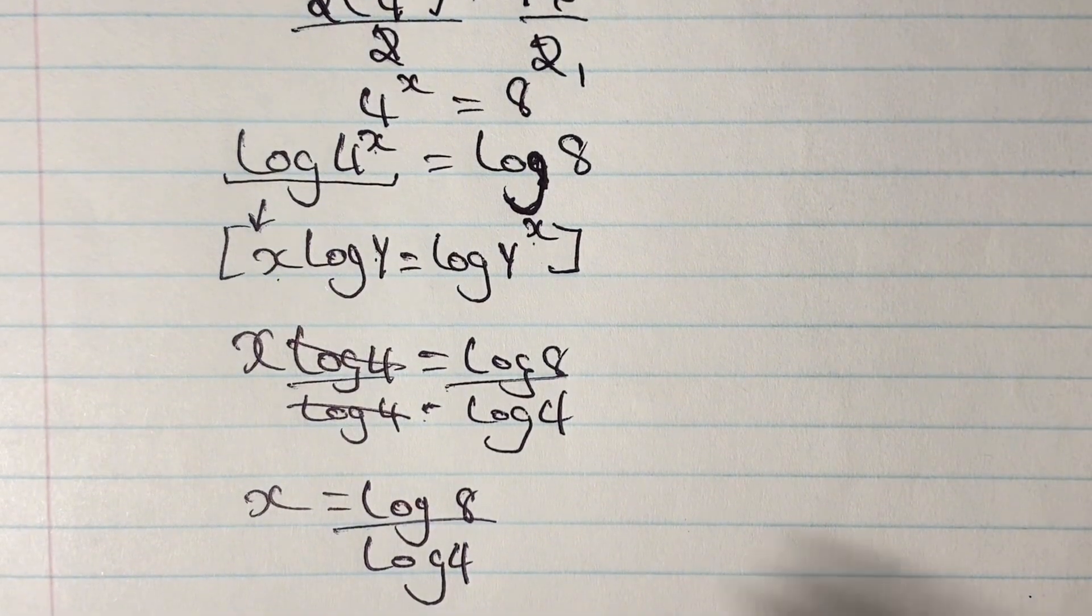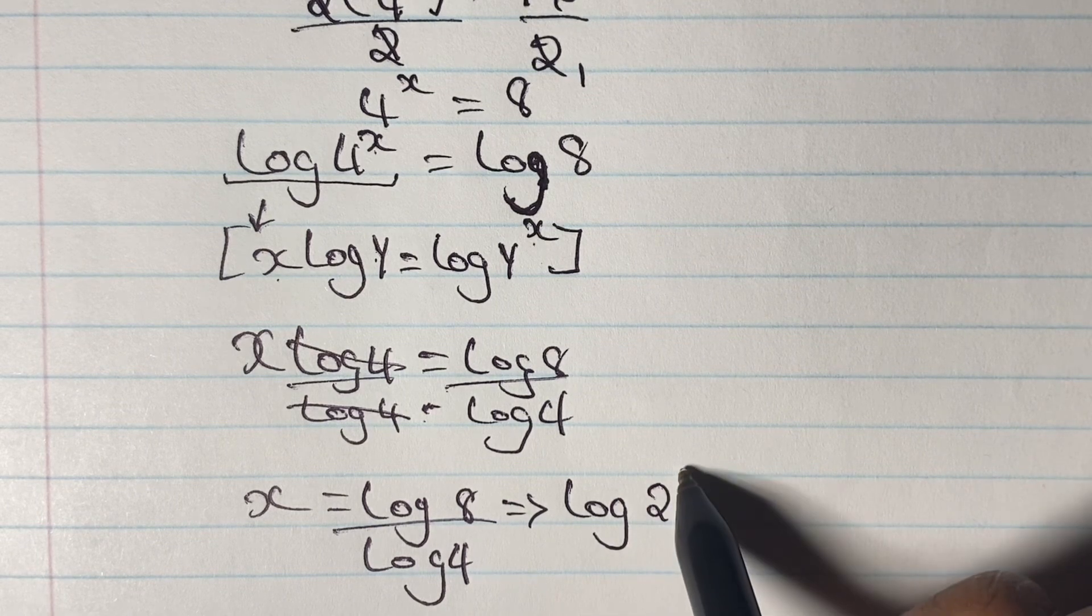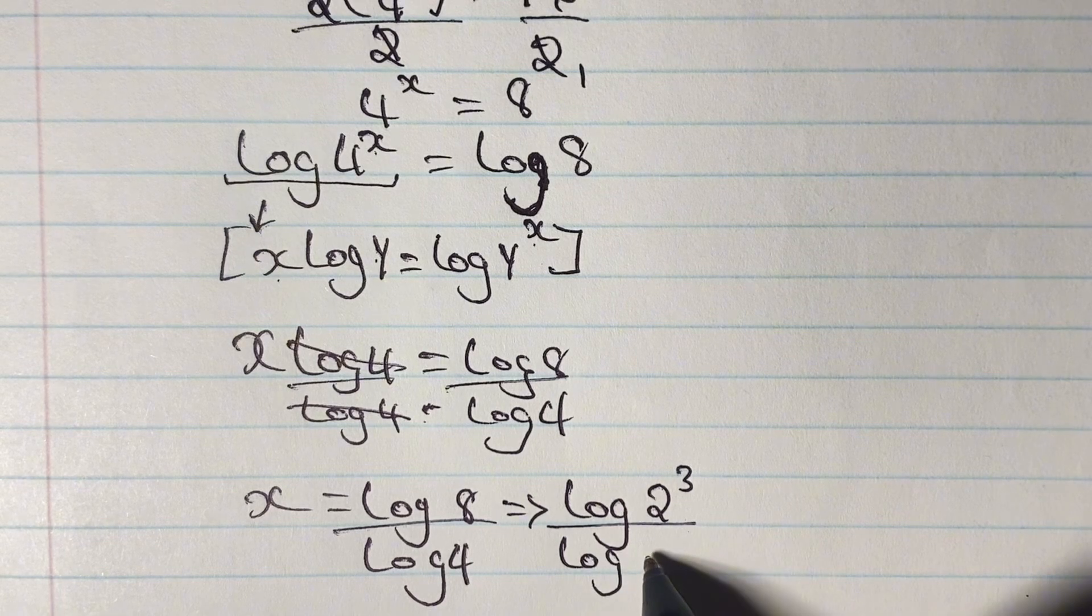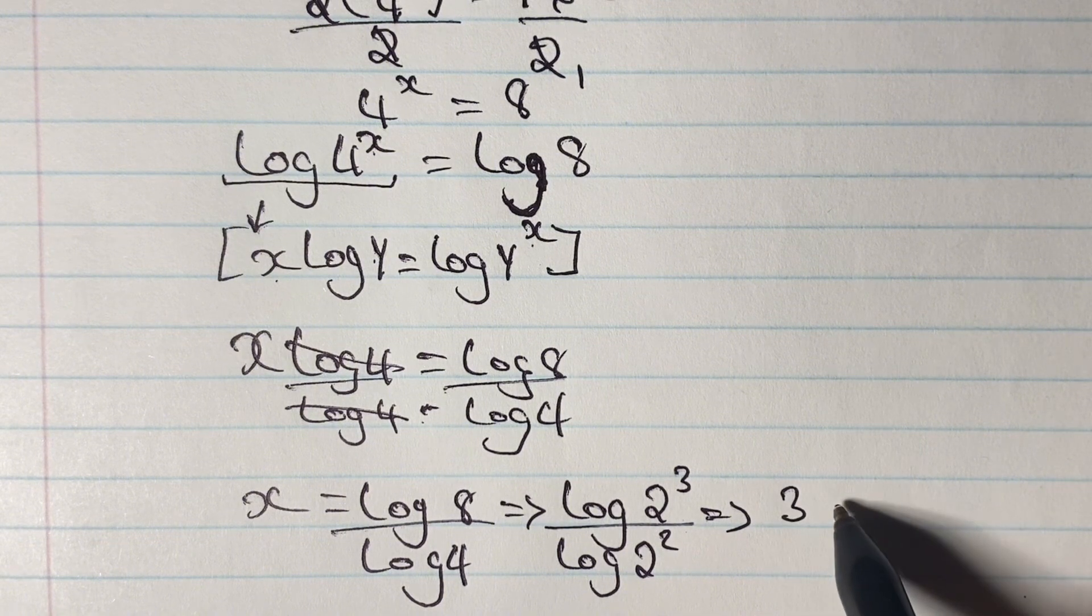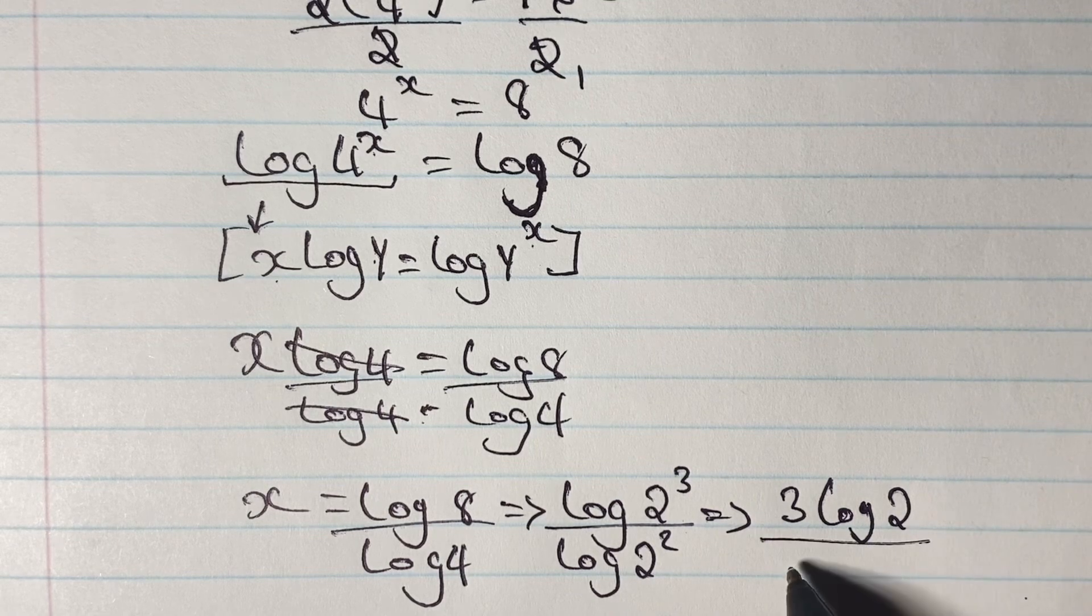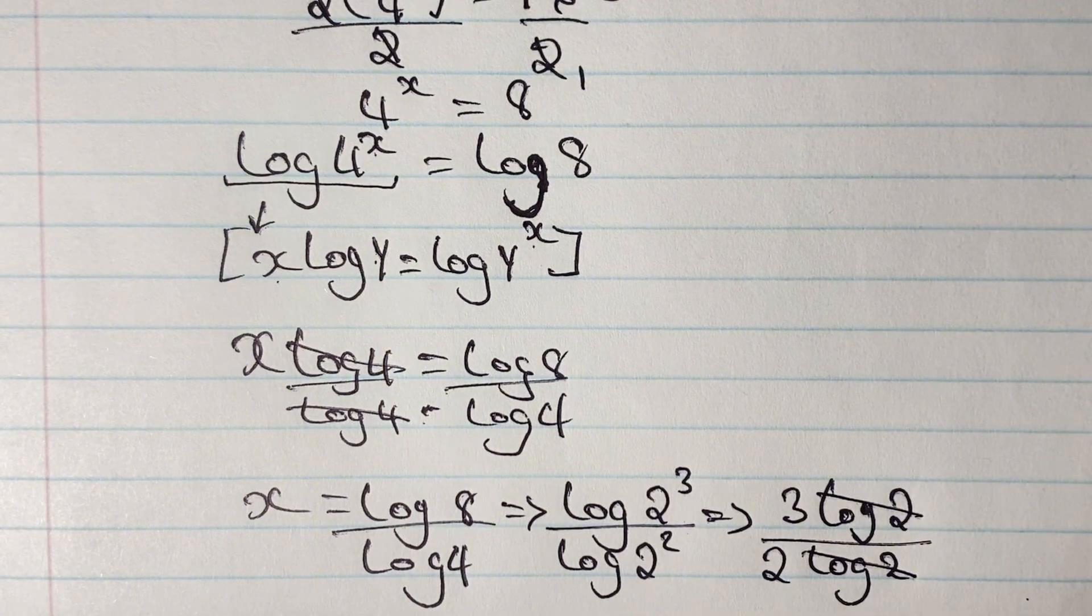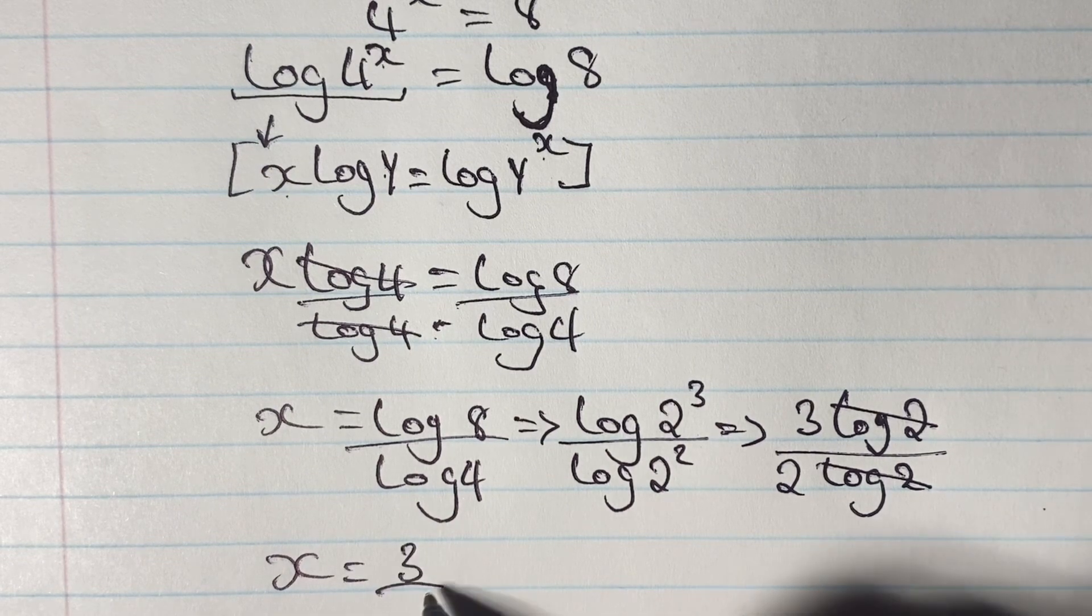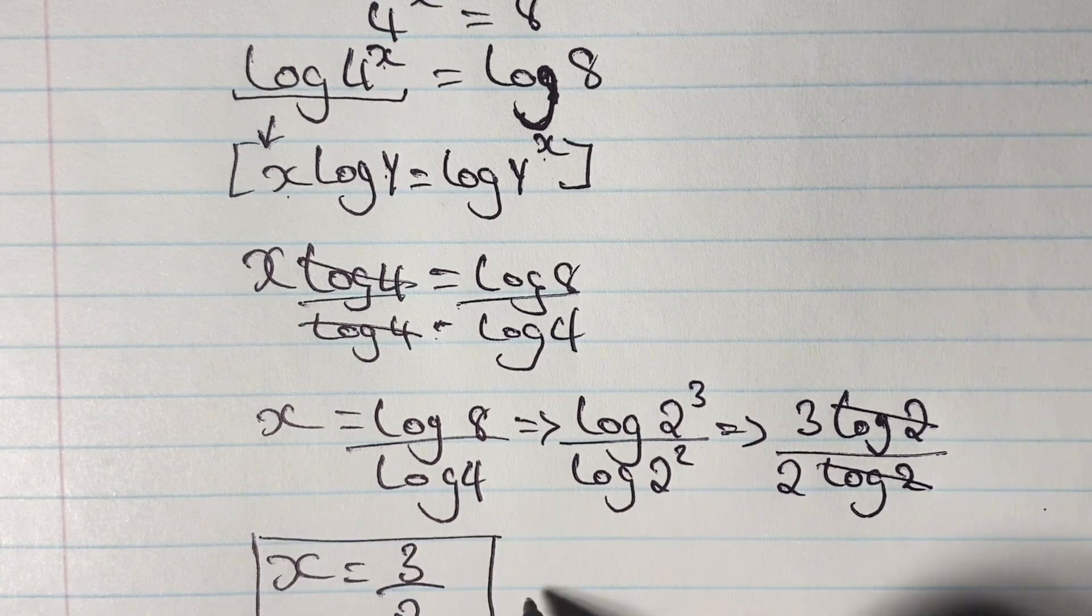Now since 8 is a cubic number and 4 is a squared number, we can simplify our equations a bit further where we have log 2 cube over log 2 squared. And using the log rule we just looked at, we could simplify this equation as follows. We have 3 log 2 over 2 log 2. And then cancel out the log 2. Therefore that leaves us with x equals 3 over 2 or 3 halves. So this is my answer for x.